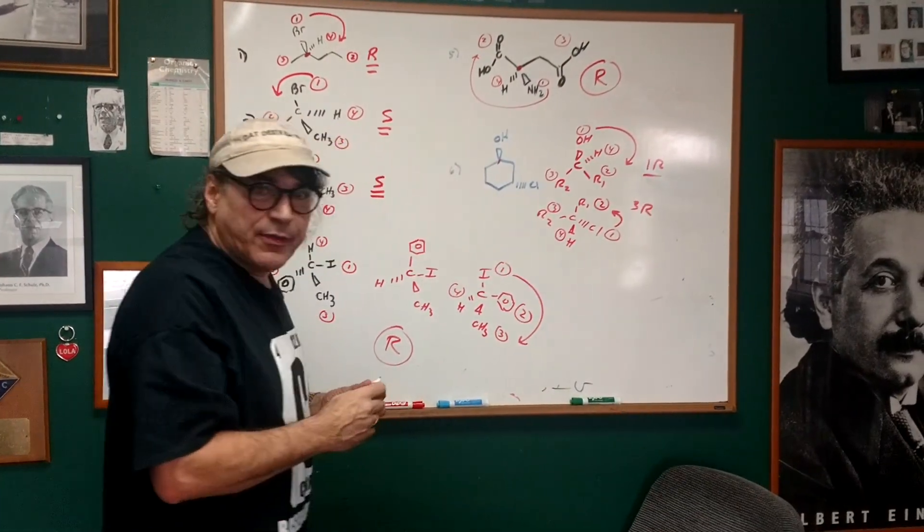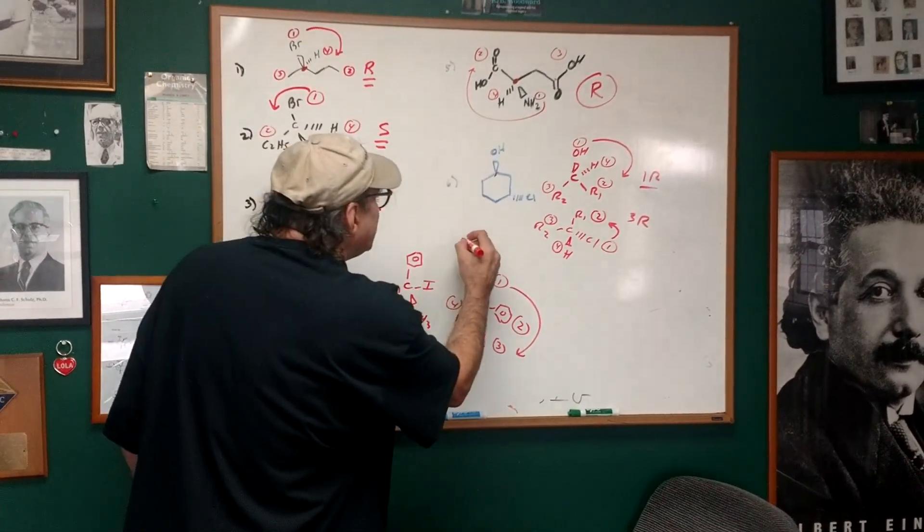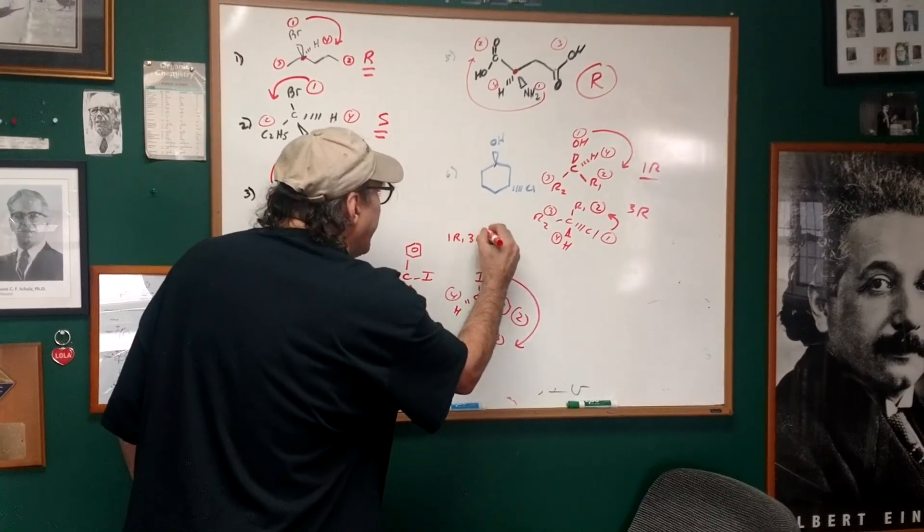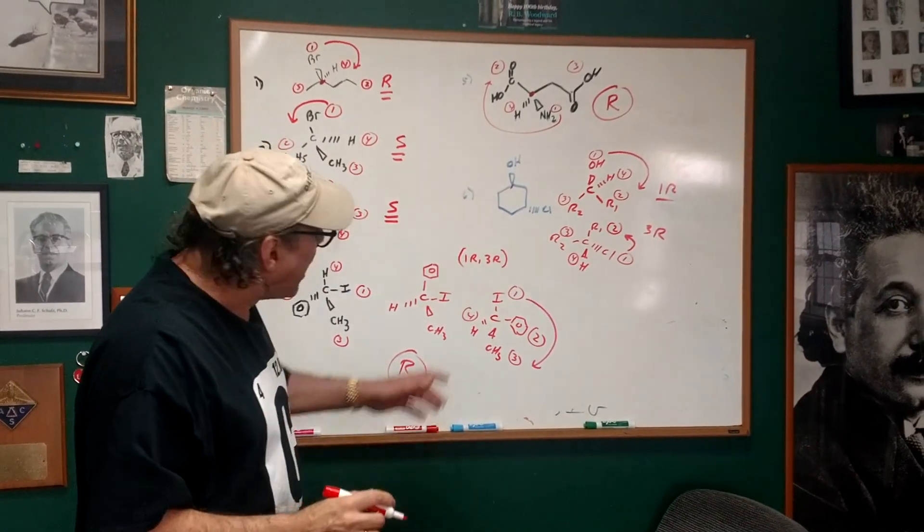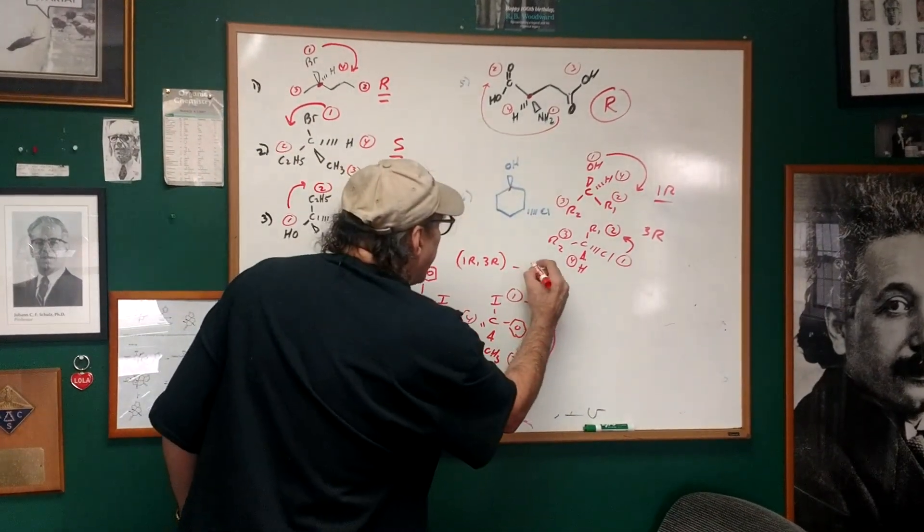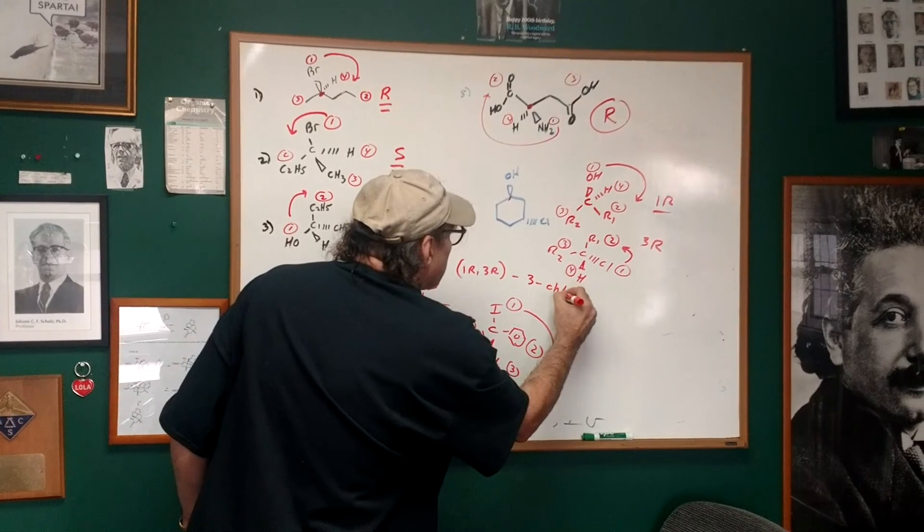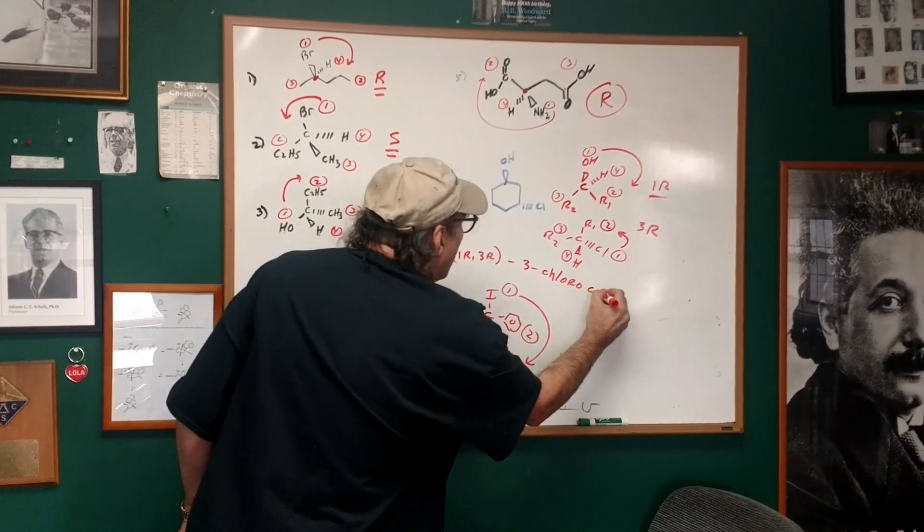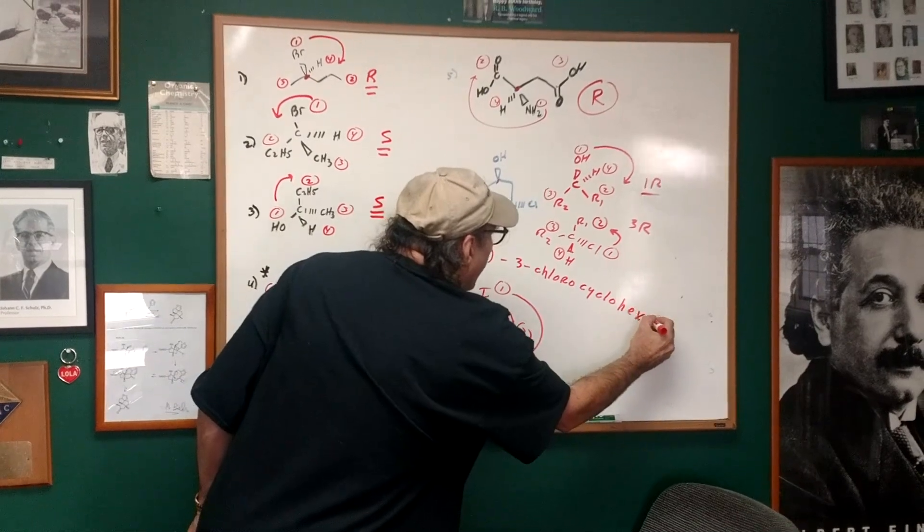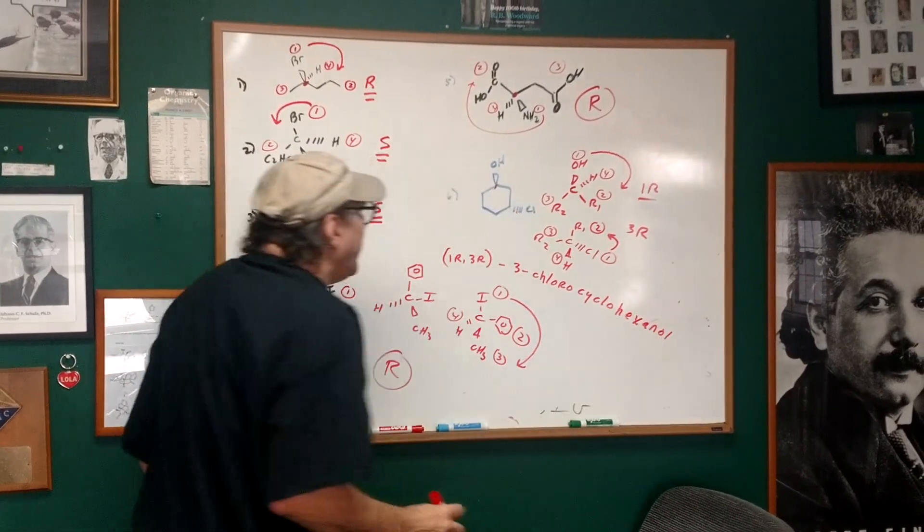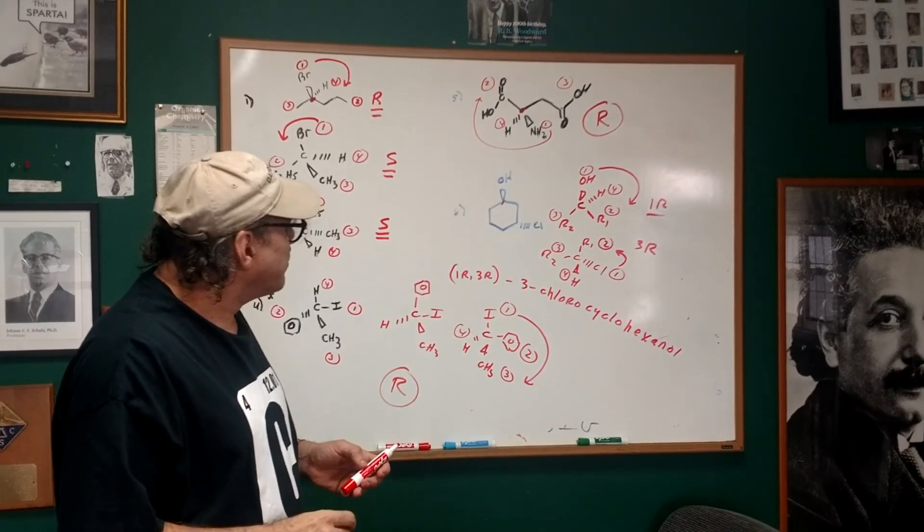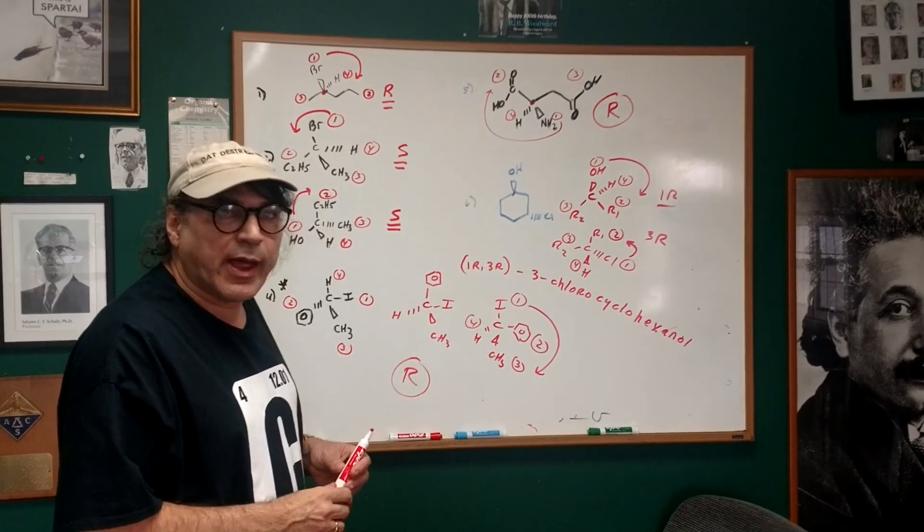So putting it all together now, how would I name this? This compound would be called 1R, 3R. Notice I put the stereochemical designator in front, and I would say 3-chloro, no number because it's a ringed alcohol, cyclohexanol. So we get a 1R, 3R, 3-chloro, cyclohexanol.